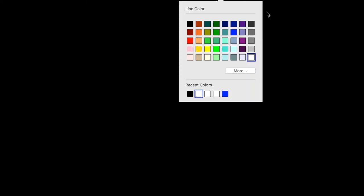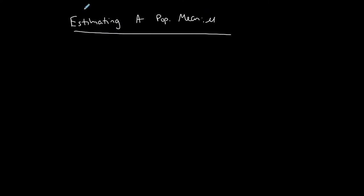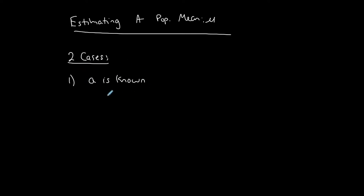These next few videos are all about constructing a confidence interval for a population mean — estimating a population mean, which is mu. You're doing confidence intervals for mu, and there are two cases. The first case, in this video, is where sigma is known, and you're going to use your standard normal distribution. If sigma is unknown, we use the Student t-distribution.